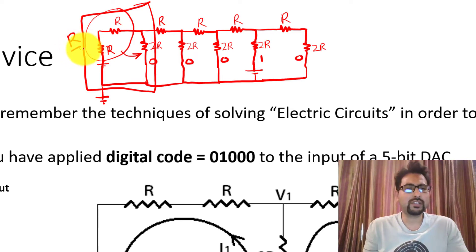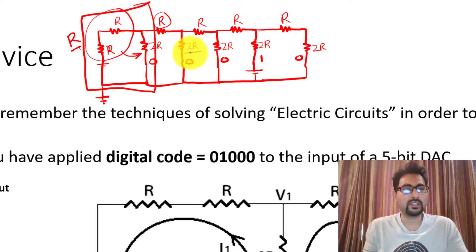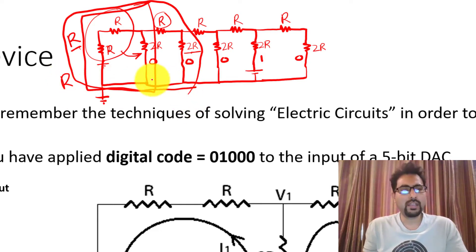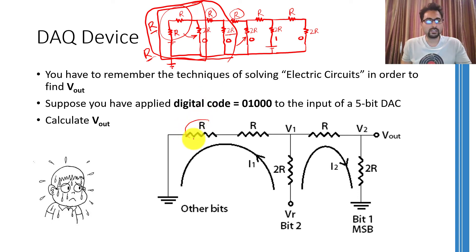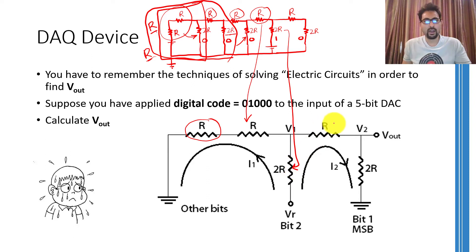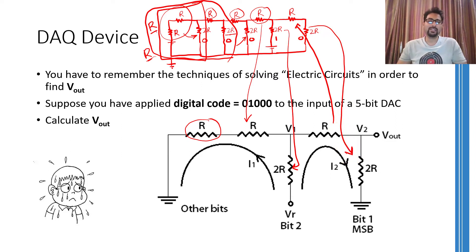Once again, this R resistance comes in series with the adjacent one, making 2R, and once again they are in parallel with this 2R resistance, dropping down to a net resistance of R. Similarly, the next R comes in series with another R to make 2R, which comes in parallel with 2R, again yielding R. This is how we came up with the simplified circuit.